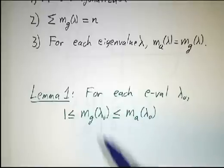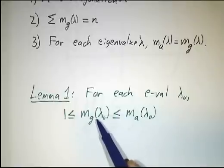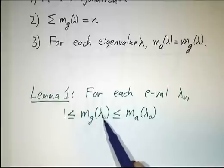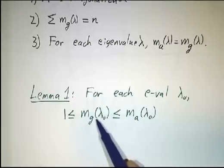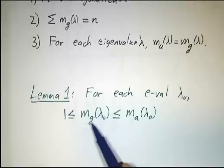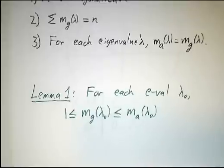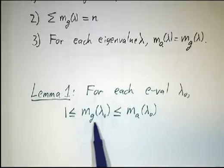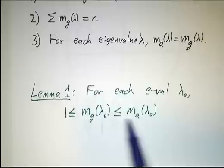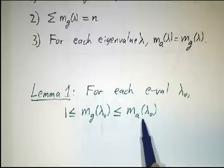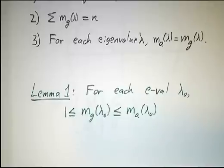Why is it at least one? If you have a root of the characteristic polynomial, then there's a solution to (A − λI)x = 0, and that solution is an eigenvector. So you always have at least one eigenvector. But the question is: why can't the geometric multiplicity be bigger than the algebraic? We're going to assume a certain geometric multiplicity, compute the algebraic, and show that the algebraic has to be at least as big as the geometric.